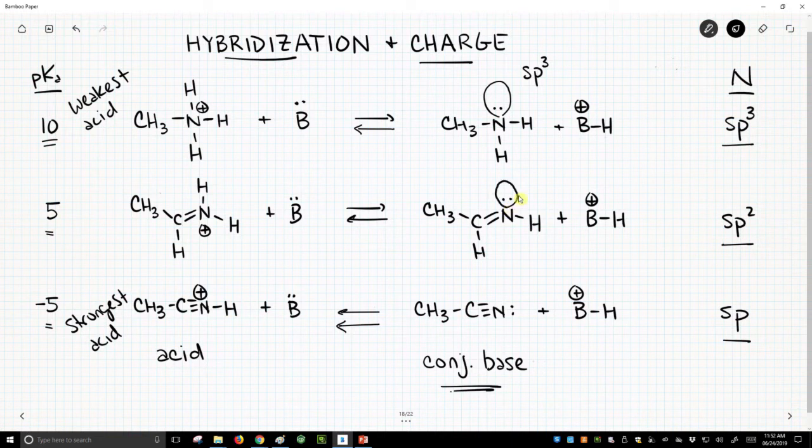This middle structure is going to be a little bit shorter and squattier because it's sp2 hybridized. It's two-thirds p character, about 67%. In the bottom case, it's sp hybridized, really short and squatty orbital. It's only 50% p character, sp hybridized.